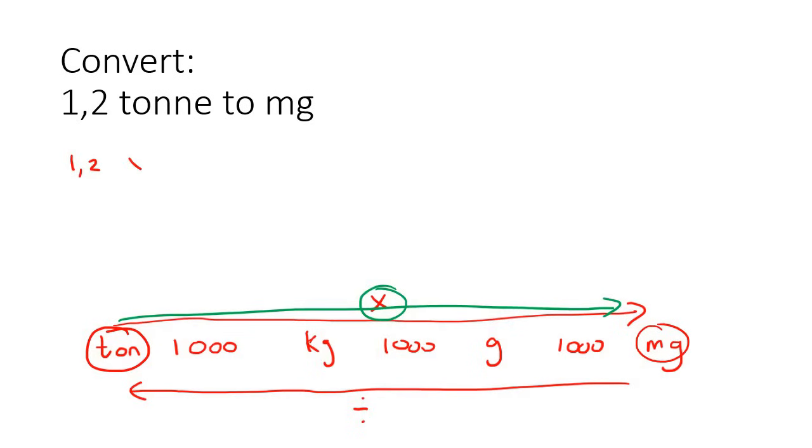So we'll say 1.2, multiply. Now, all the numbers that we pass. We're going to pass 1,000, another 1,000, and another 1,000. So we're going to say times 1,000, times 1,000, times 1,000. And so if you have to work this out, it's going to be quite a large number. It's going to have eight zeros, three, four, five, six, seven, eight. And then we'll say milligram.